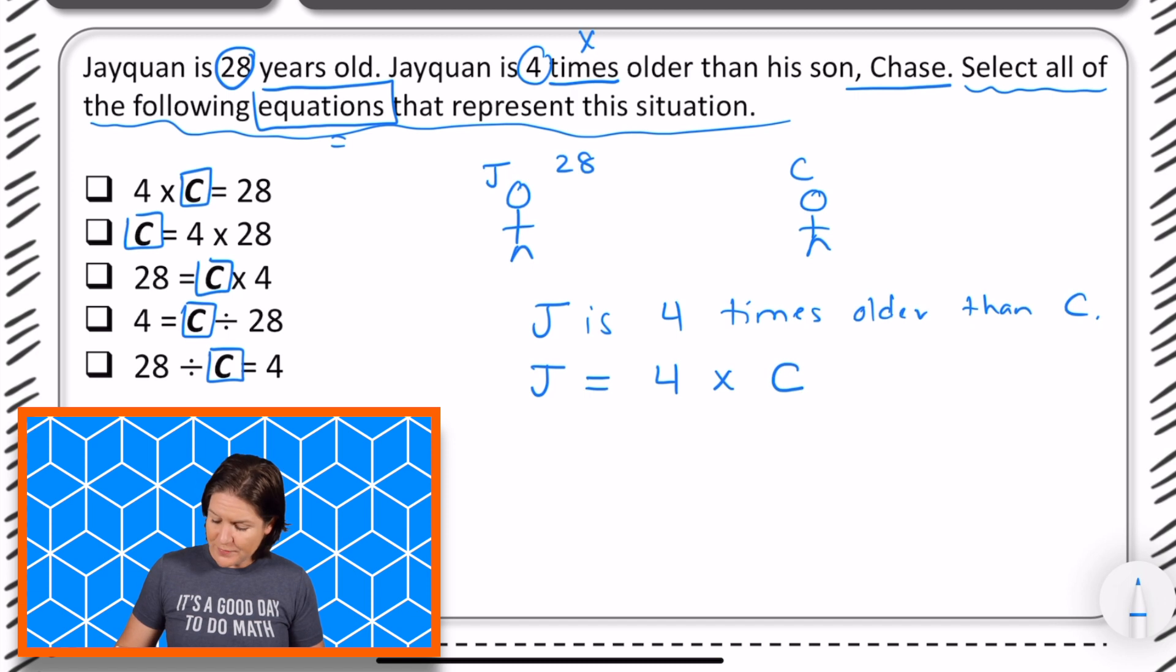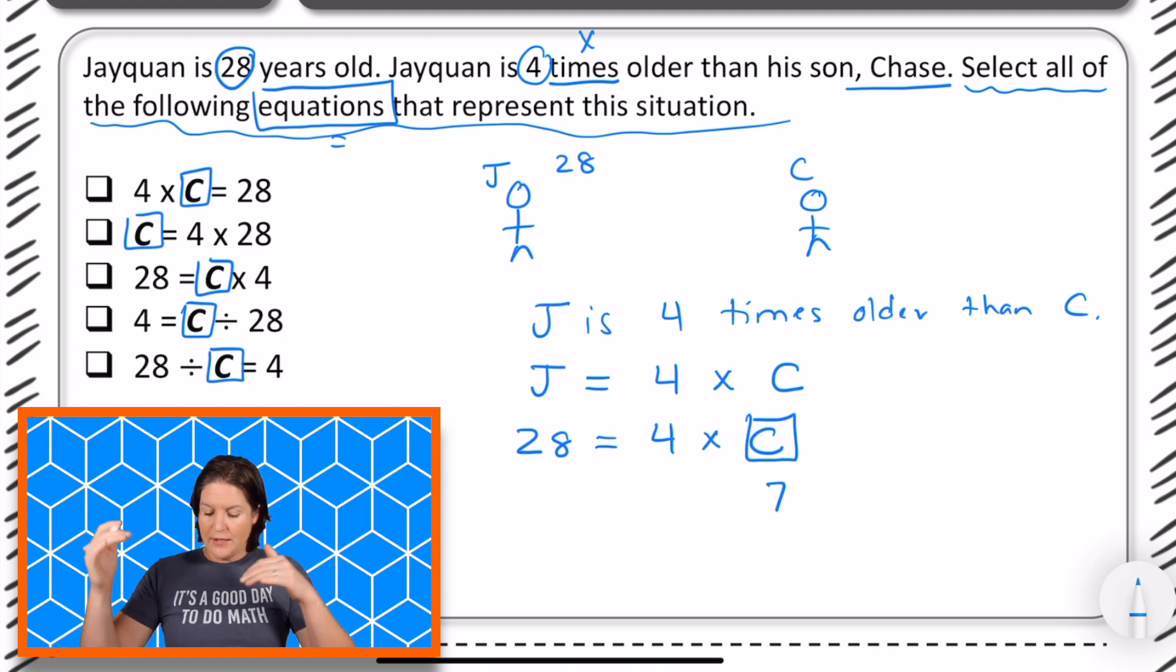28, right? So let's plug that in. Jaquan is 28, which is four times older than Chase. And we don't even really have to figure out how old Chase is, but four times what equals 28? 4 times 7, right? So in this case, Chase would be 7. Let's go over to our equations now and see which ones are being represented there.